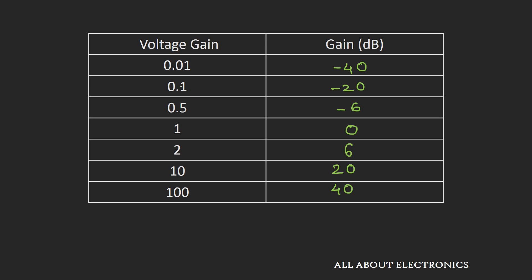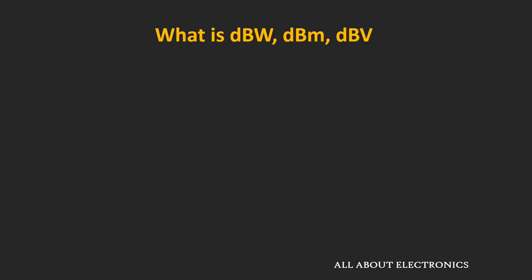Now let's see what dBw, dBm, and dBV mean. So far we have represented voltage and power gain in decibels. But what if we want to represent power or voltage itself on a decibel scale? Since the decibel scale is a unitless quantity, we need to represent voltage and power relative to some reference. When representing power in dBw, the reference is 1 watt; when representing voltage in dBV, the reference is 1 volt.